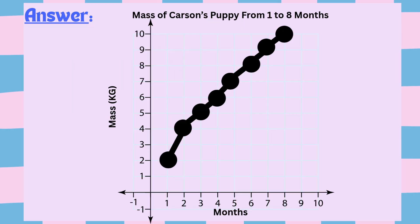For this question, you need to create a line graph because you're showing how the puppy's weight changes over time. Your graph should include a clear title like puppy's growth over eight months, a properly labeled x-axis saying month, and a y-axis saying mass in kilograms, an appropriate scale for both axes, and correctly plotted points with straight line segments joining the points.